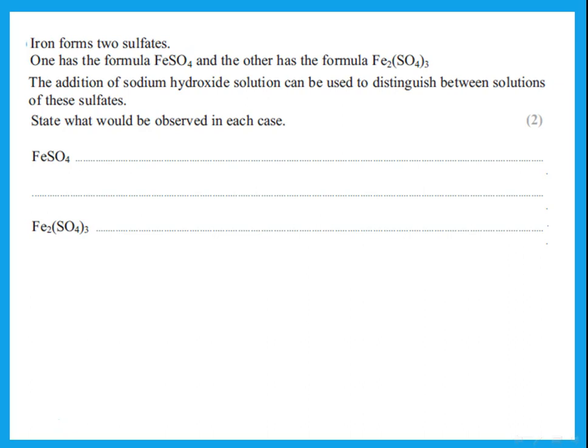Addition of sodium hydroxide solution can be used to distinguish between iron(II) and iron(III). FeSO₄ is iron(II) because the valence of iron equals that of sulfate (2). In Fe₂(SO₄)₃ the valence of iron is 3. When sodium hydroxide is added, iron(II) gives a green precipitate and iron(III) gives a reddish-brown precipitate.